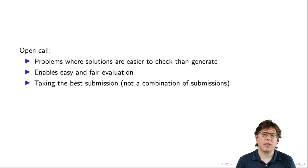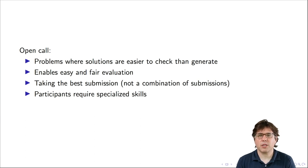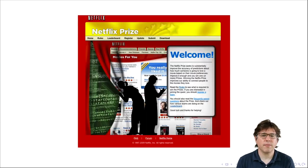In an open call you often take the best submission, not a combination of submissions. So if you remember in the earlier video about human computation, we would often take the labels of many people and combine them together to get an average. Here we don't do an averaging, we take the best. And this requires participants to have specialized skills because they're going to often solve a problem that the researcher herself might not even know how to solve. So let me give you now some examples.